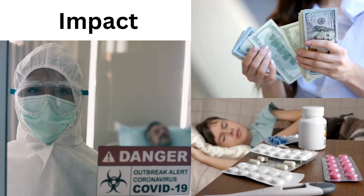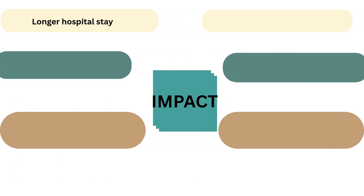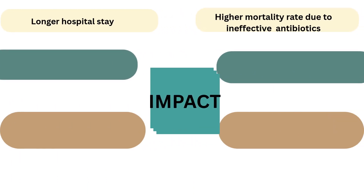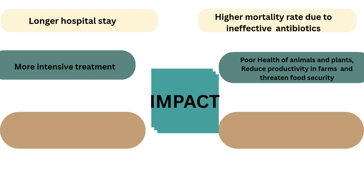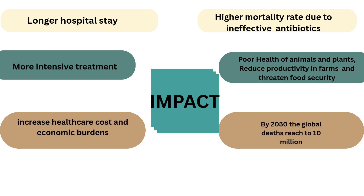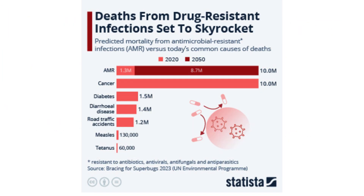The impacts of AMR include longer hospital stays, high mortality rates due to ineffective antibiotics, more intense treatment, poor health of animals and plants reducing productivity in farms, and threats to food security. Increased healthcare costs and economic burdens are also seen. By 2050, the global death toll could reach 10 million.